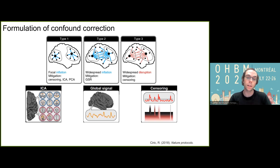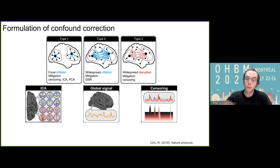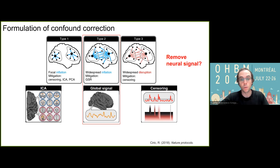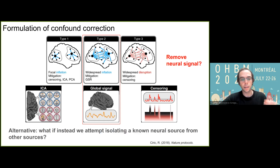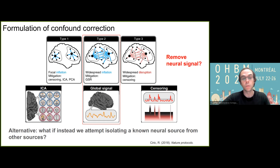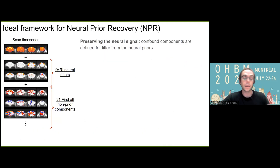However, even nowadays, it's not clear whether there's one set of strategies that can perfectly correct for all the potential confounds while preserving the neural signal. This is a particular issue in the case of global signal regression, since the global signal has been related to neural signal and might be removing some signal of interest. What I'm going to propose in this presentation is that we can approach this problem from a different angle, where we instead try to separate predefined neural sources from all other sources. I'm going to argue that this can greatly simplify the problem, and I'm referring to this framework as neural prior recovery, or NPR.